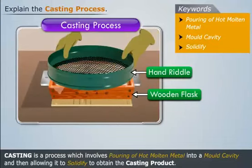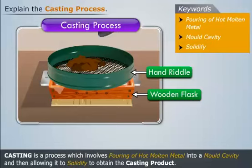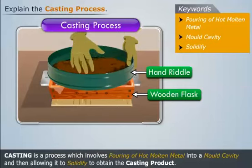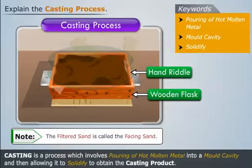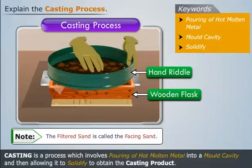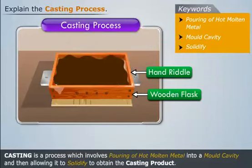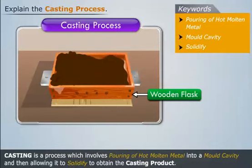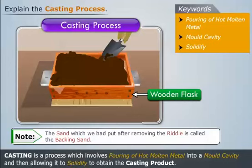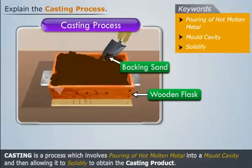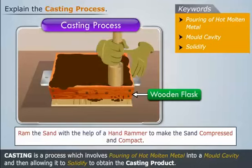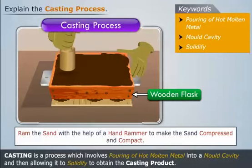Then place a hand riddle on top of the flask. Now put some sand in this riddle and filter the sand. Note that the filtered sand is called the facing sand. Now remove the riddle and put some more sand in the flask till it gets filled completely. Note that the sand put after removing the riddle is called the backing sand.